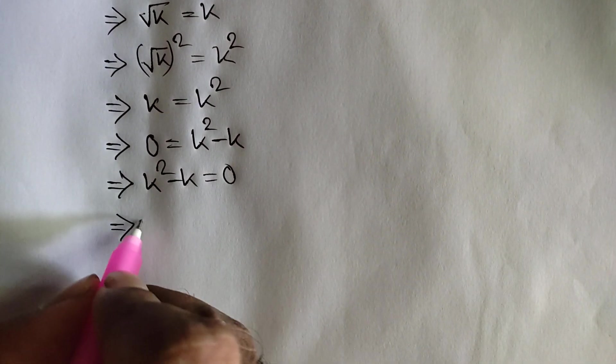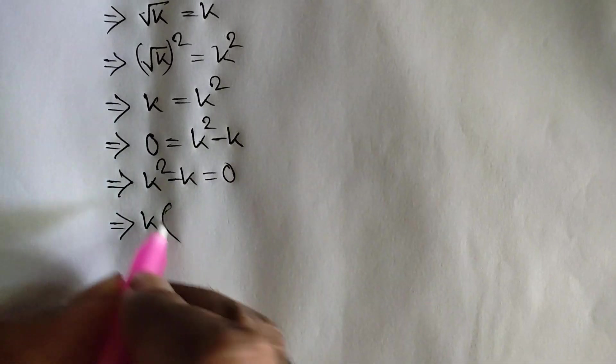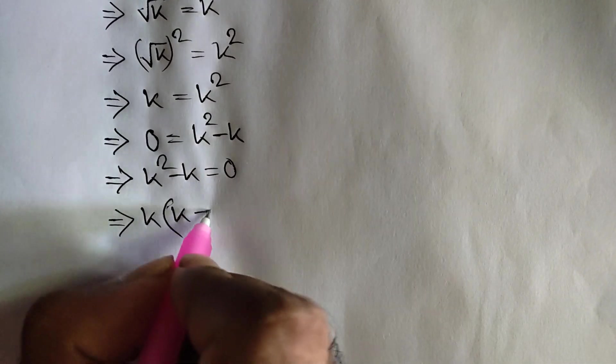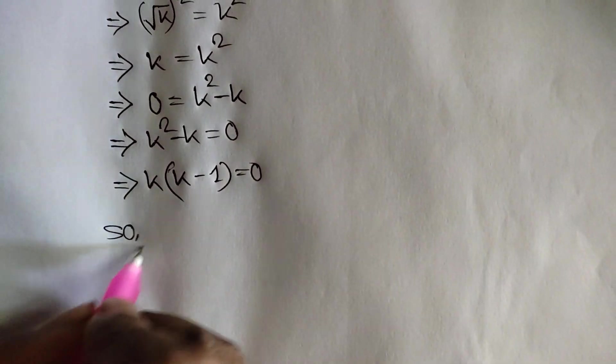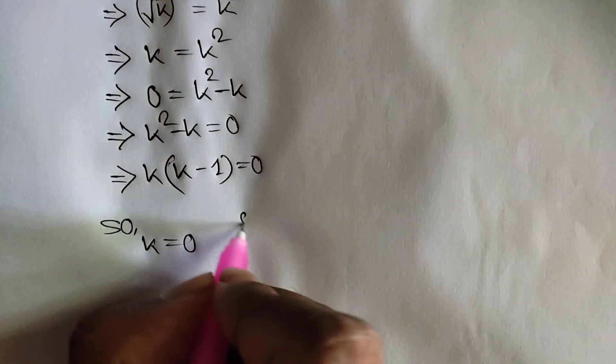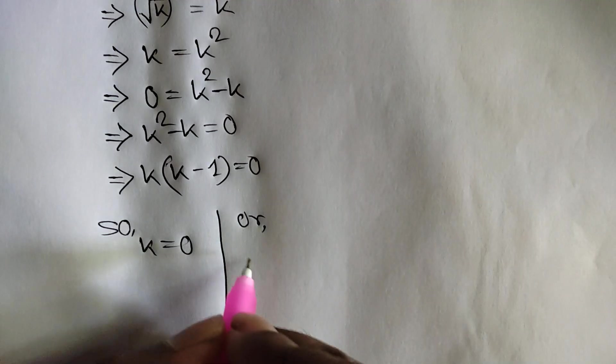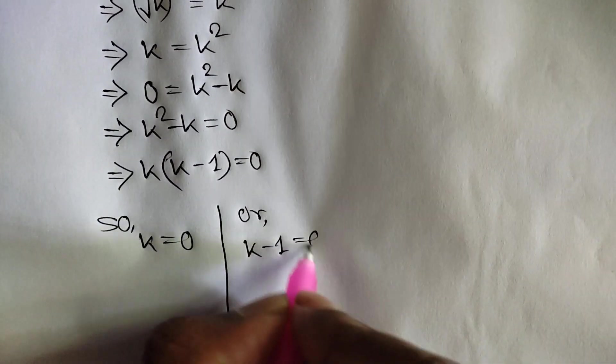Now taking common k, we can write k times k minus 1 is equal to 0. So k is equal to 0, or k minus 1 is equal to 0.